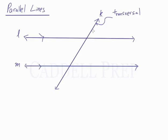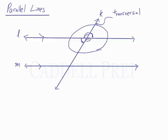When a transversal intersects two parallel lines, there are a lot of angle relationships that result. If we focus on the intersection up top, we see vertical angles — this angle is the same measure as this angle, and these two angles are the same measure as these two. Also, these pairs of angles are supplementary.